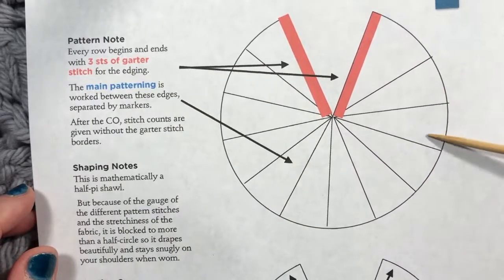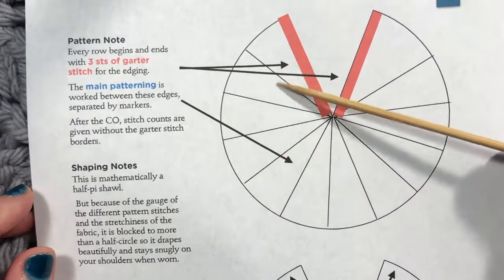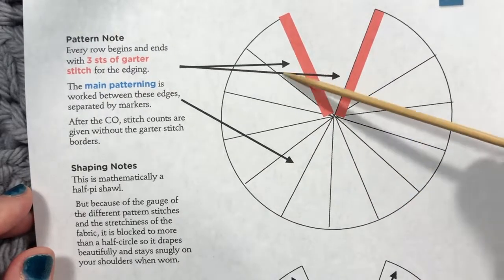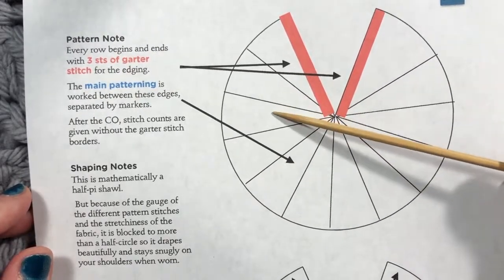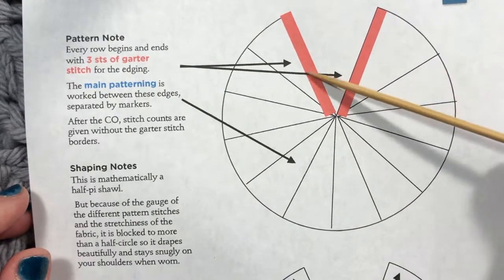These just represent lace pattern repeats, and they'll be different in each part of the shawl, but this is just a simplification. I want you to remember that you have those three stitches all the way.